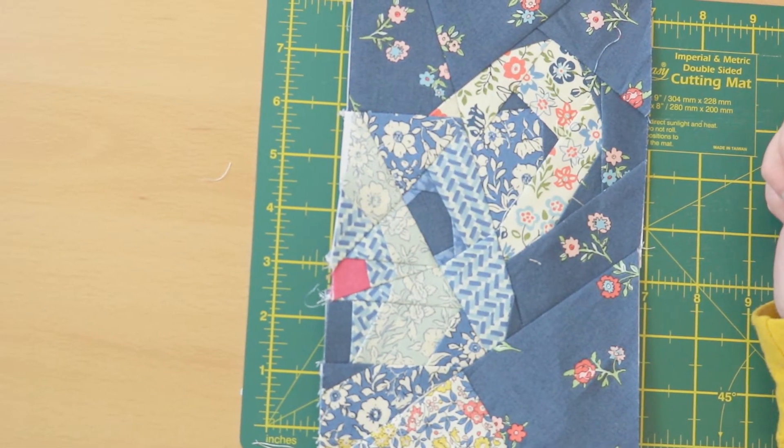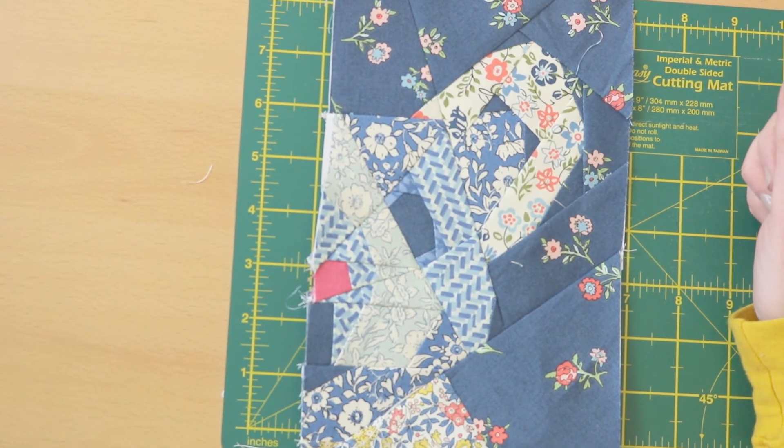You remove all the papers and then the block is complete and ready to either quilt or turn into a cushion or whichever project you have in mind.